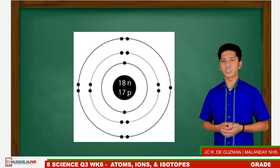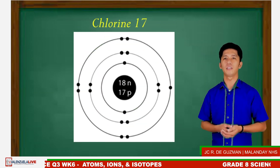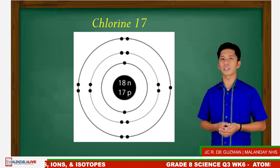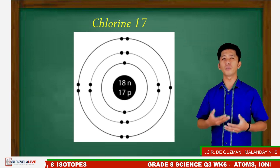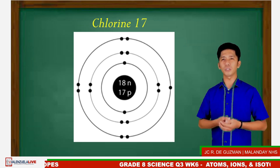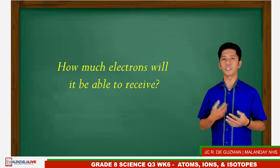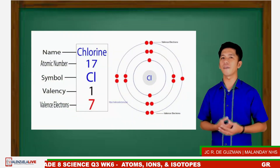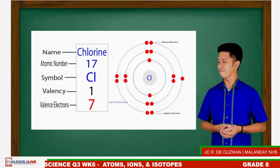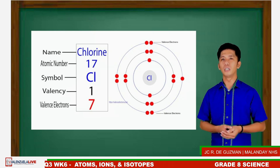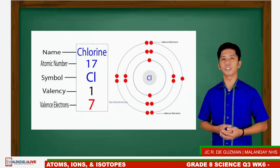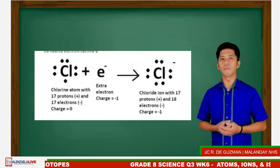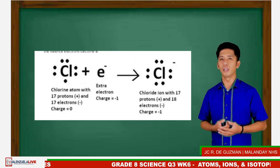Another example is Cl-17 or chlorine-17. Chlorine has 17 protons and 17 electrons. Since chlorine is a non-metal type of element, it loves to receive electrons. But the question is, how much electrons will it be able to receive? Let's take a look at the valence electron of chlorine, which is 7. Following the octet rule, the maximum number per shell is 8 electrons, meaning to say that chlorine needs to gain one more electron to complete the number of electrons on its outer shell and become stable.